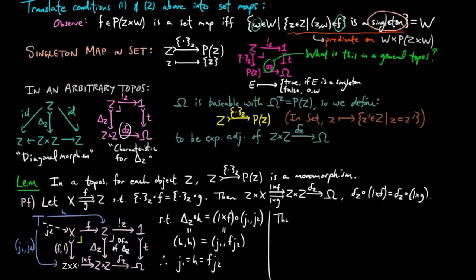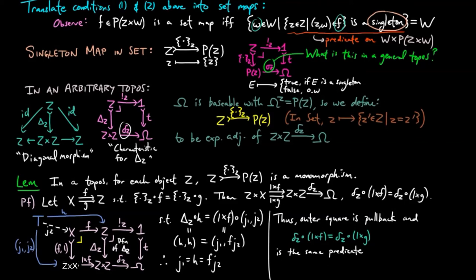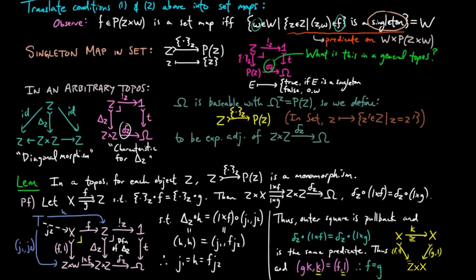By the pullback lemma the outer rectangle is a pullback. Therefore delta sub z composed with (1 cross f) — which equals delta sub z composed with (1 cross g) — classifies both sub-objects f1 and g1. Since every instance of f in the diagram could be replaced by g, these two monomorphisms are the same sub-object of z cross x. Since sub-objects are determined up to isomorphism, there exists a unique isomorphism k such that gk equals f, and thus k equals the identity on x and g equals f, completing the proof that the singleton morphism on z is a monomorphism.